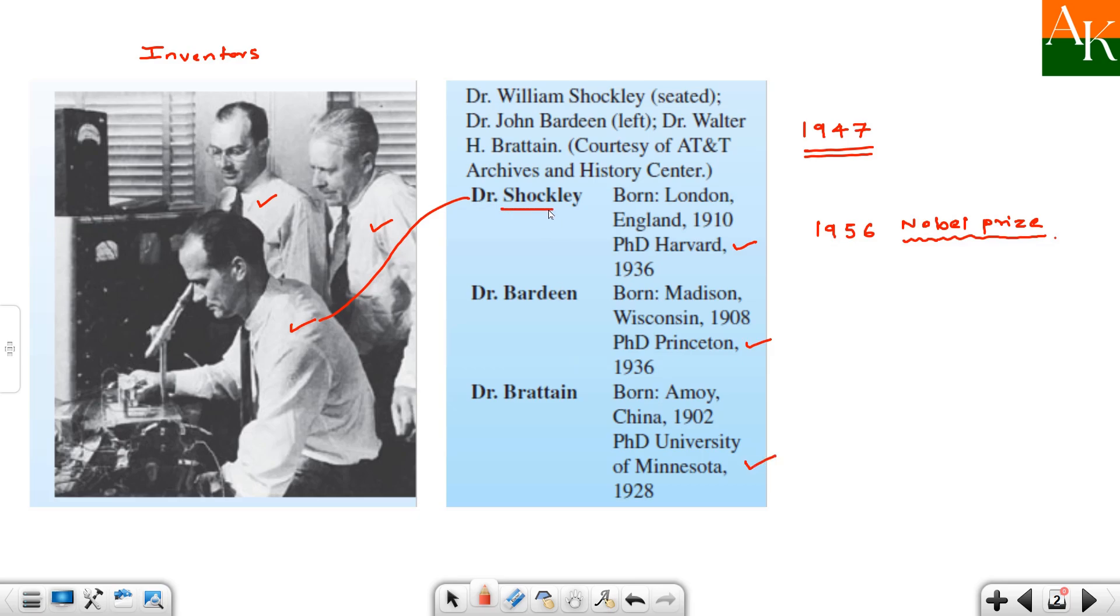This is Dr. Shockley later on he invented JFET that is unipolar junction which is a unipolar device junction field effect transistor and Dr. Baldin later on awarded as another Nobel Prize in 1972 for its theory on superconductivity.